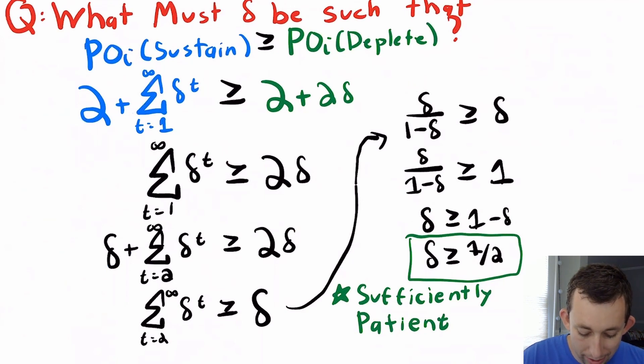We're going to get that delta must be greater than or equal to one half. And all that means is, as you might suspect, Bill and Debra have to be sufficiently patient in order for sustain to work. If I don't care enough about the future, I'm going to deplete the aquifer in two turns. But if I do care about my crops in future periods, even like period three, then I'm going to want to sustain the aquifer. And this is the level of patience I need in order to make this happen.